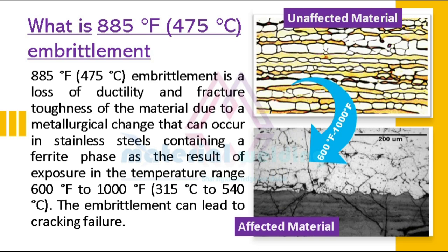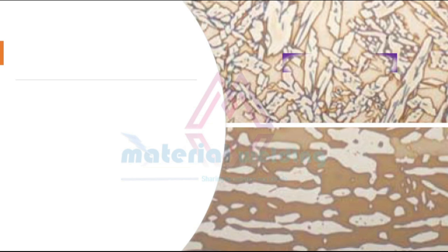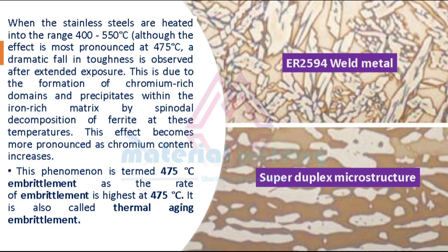This type of embrittlement can lead to cracking failure. When stainless steels are heated into the range 400 to 550 degrees Celsius, although the effect is most pronounced at 475 degrees Celsius, a dramatic fall in toughness is observed after extended exposure. This is due to the formation of chromium-rich domains and precipitates within the iron-rich matrix by spinodal decomposition of ferrite at these temperatures. This effect becomes more pronounced as chromium content increases. This phenomenon is also called thermal aging embrittlement.